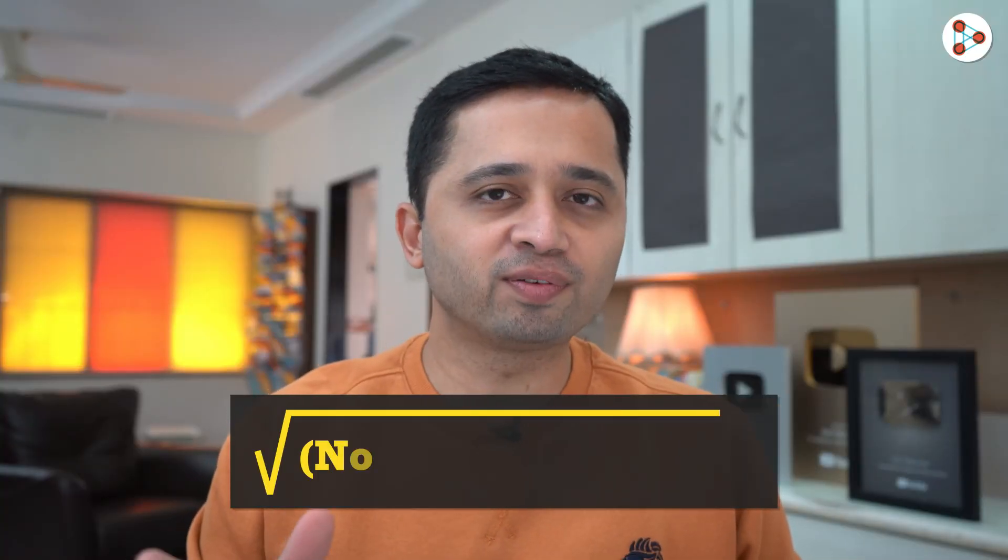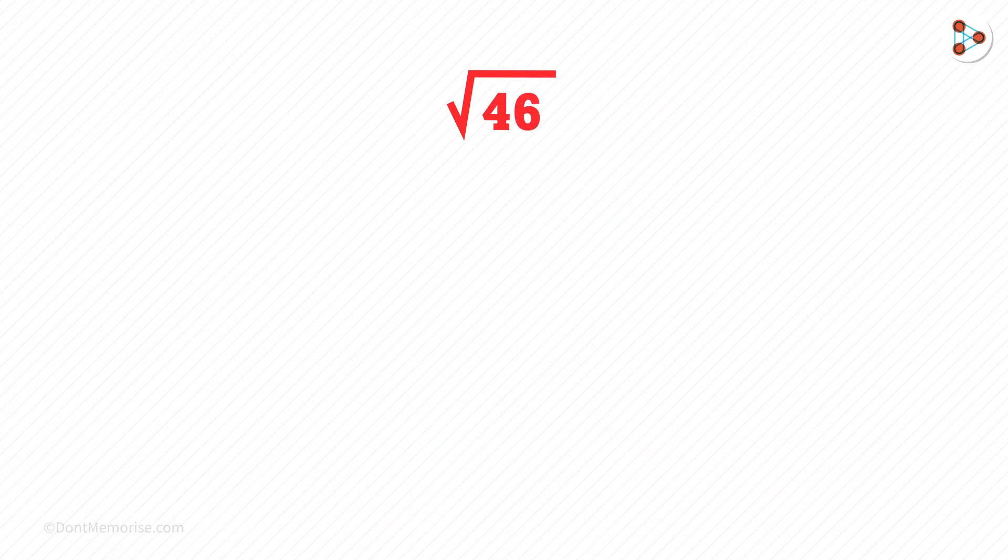How do we calculate the square root of a non-perfect square? For example, what is the square root of 46? It's very simple to calculate the approximate square root of 46.